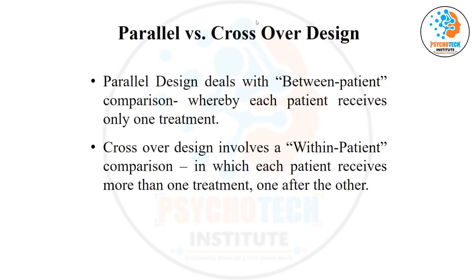Researchers then asked: can we design a study to see the true effect of the intervention with 100% balance? The solution they arrived at was: whatever intervention you give to patient A, also give intervention B to the same patient A. Because it is the same patient receiving both treatments, the effect observed is true and the patients are 100% balanced.